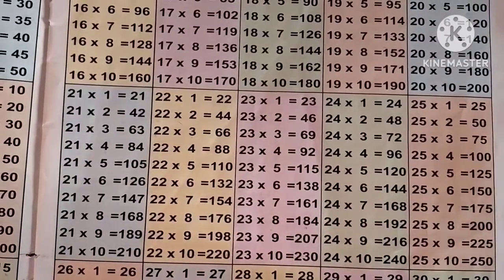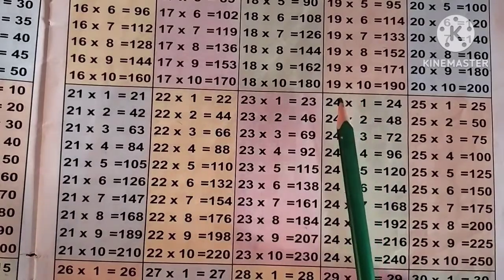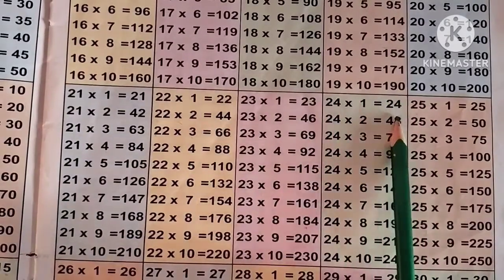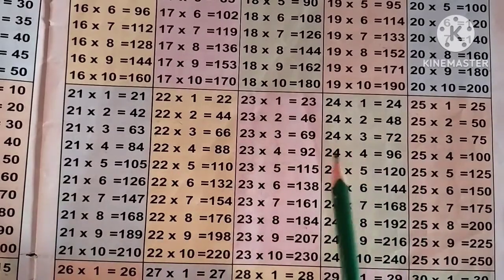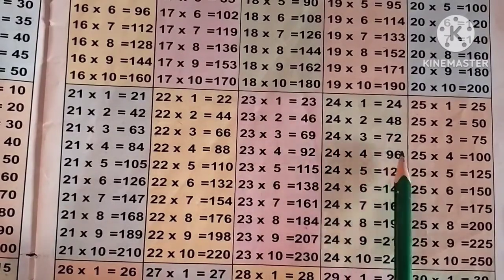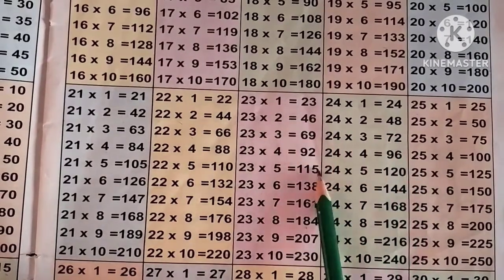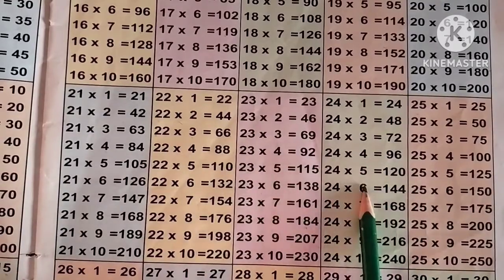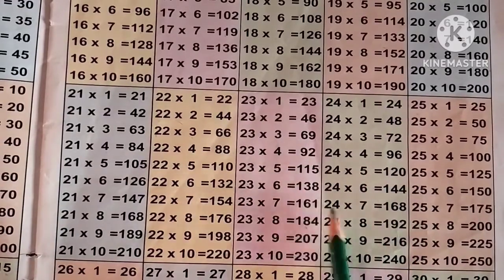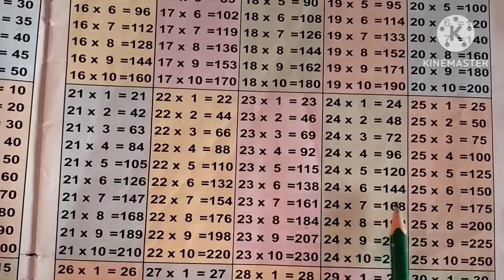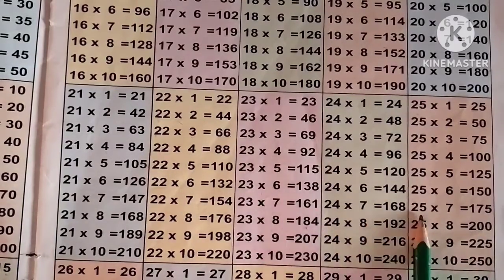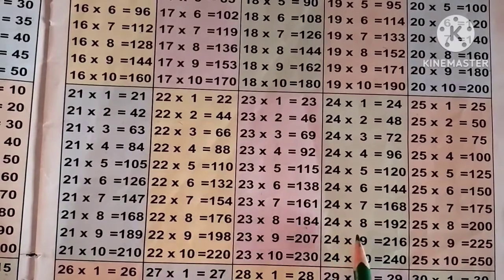Now the table of 24: 24 ones are 24, 24 2s are 48, 24 3s are 72, 24 4s are 96, 24 5s are 120, 24 6s are 144, 24 7s are 168, 24 8s are 192, 24 9s are 216, 24 10s are 240.